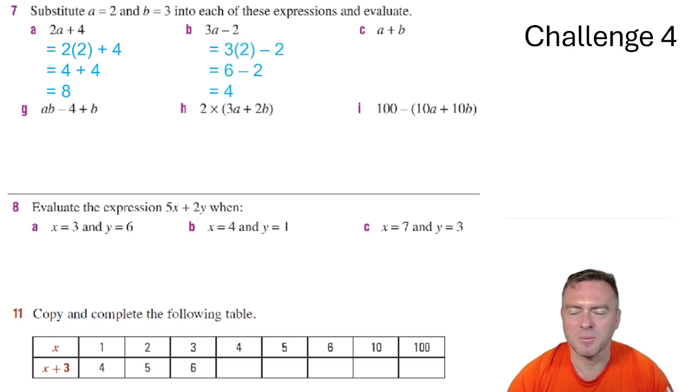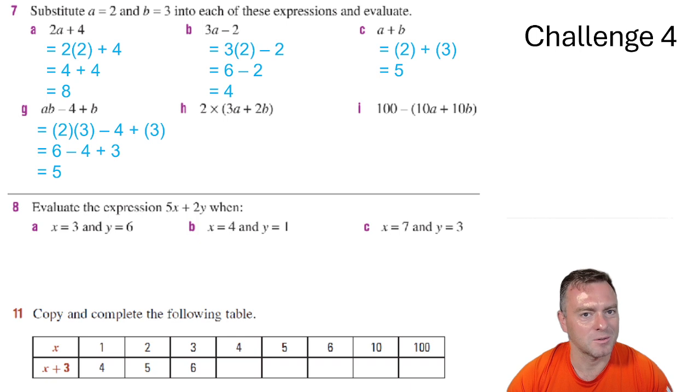The next one we would have 3 times 2 minus 2. So we get 6 take away 2 which equals 4. The next one here we've got 2 plus 3 which is just 5. The next one here we've got 2 times 3 minus 4 plus 3. So we've got 6 minus 4 plus 3 which equals 5.